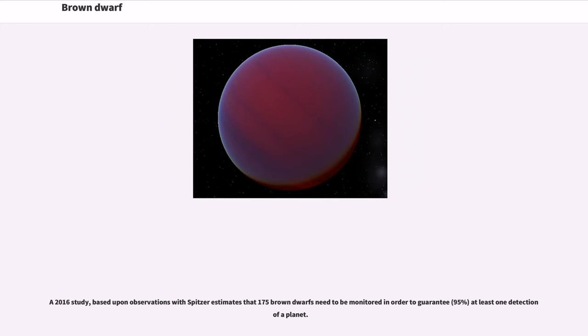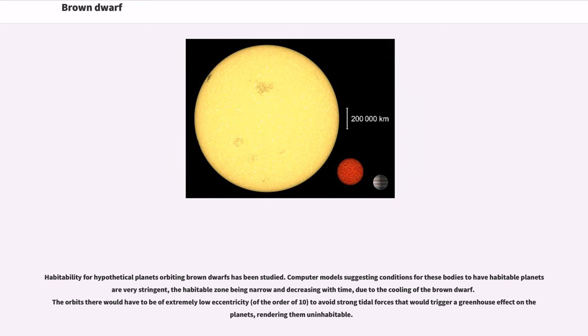Habitability for hypothetical planets orbiting brown dwarfs has been studied. Computer models suggesting conditions for these bodies to have habitable planets are very stringent. The habitable zone being narrow and decreasing with time due to the cooling of the brown dwarf. The orbits there would have to be of extremely low eccentricity to avoid strong tidal forces that would trigger a greenhouse effect on the planets, rendering them uninhabitable.